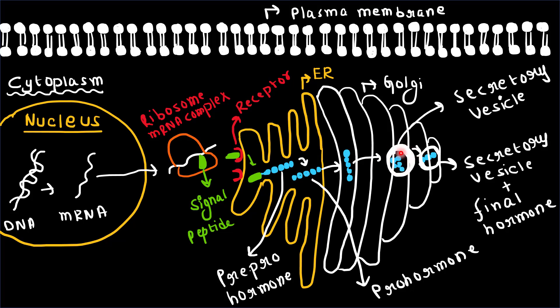In the secretory vesicles, proteolytic enzymes cleave the protein. This time, the prohormone produces the final hormone.